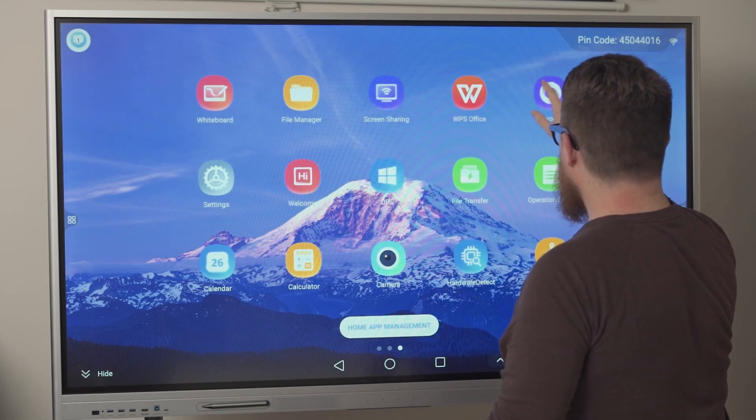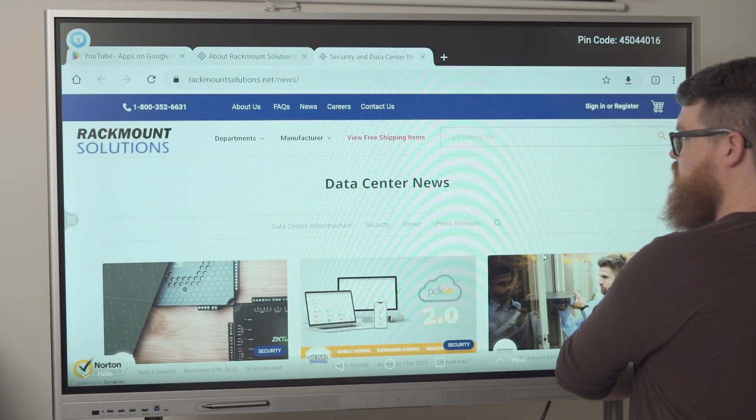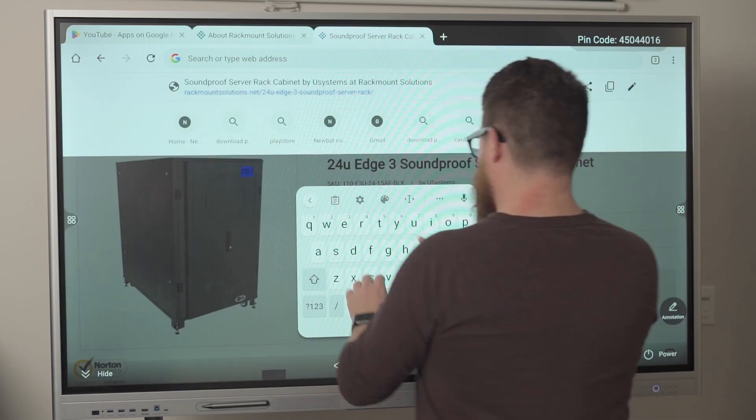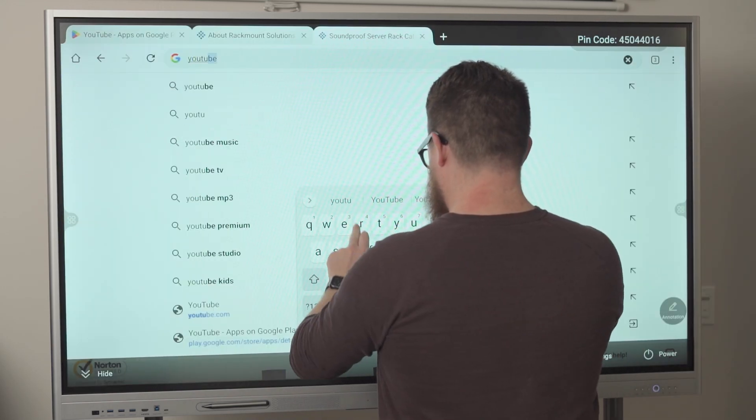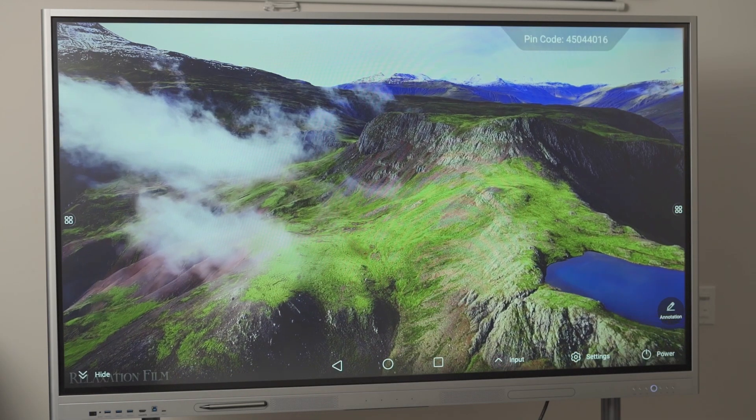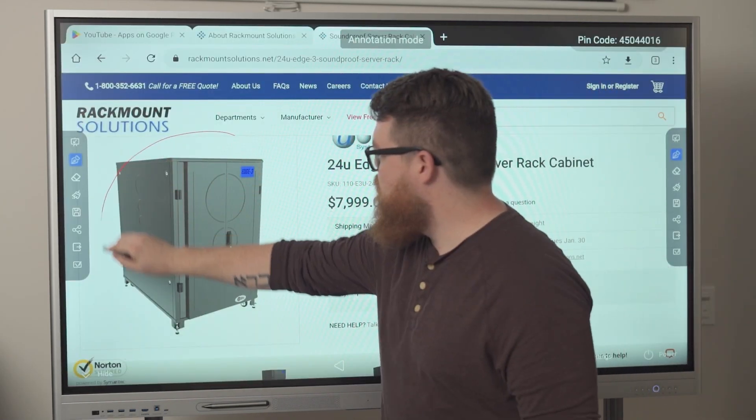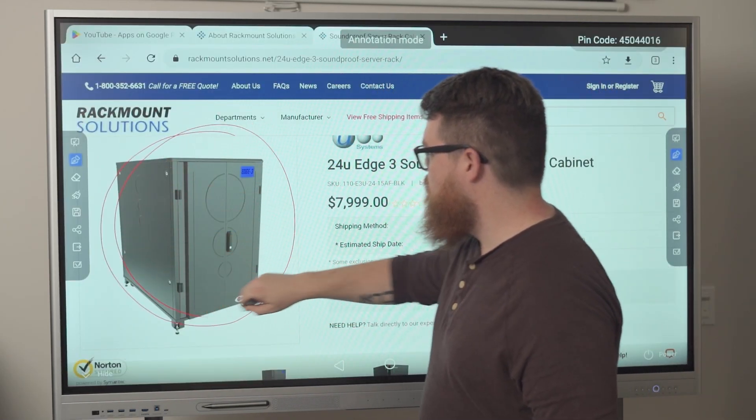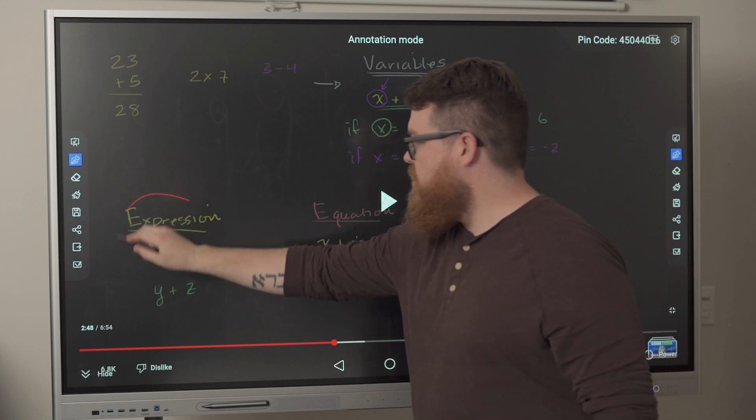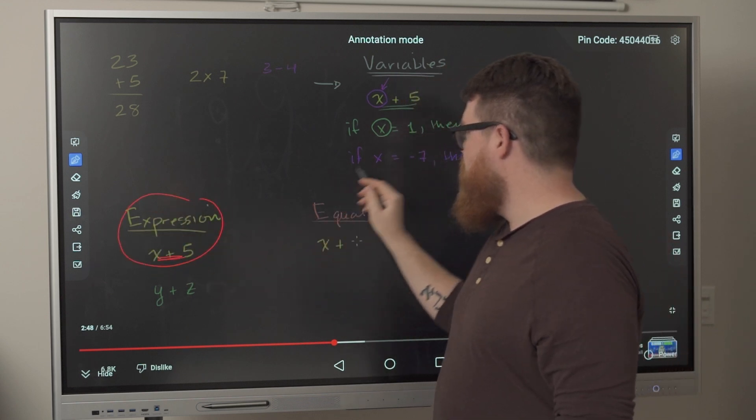There are multiple apps within the board, but the internet browser is one that comes in handy especially. It allows you to search up anything and access any website. You can even play 4K videos. On top of that, you can markup and write anywhere on the display while the internet browser is being used. The uses for this are endless.